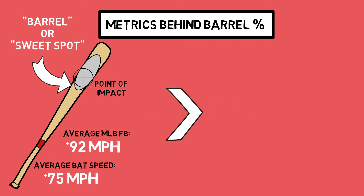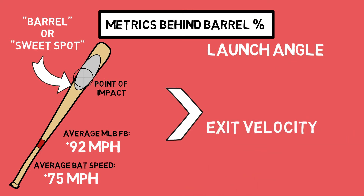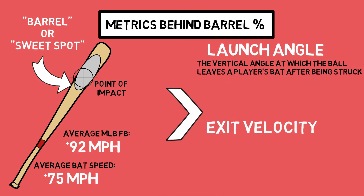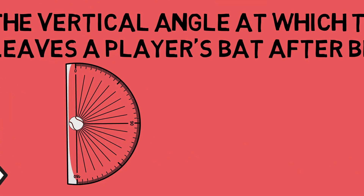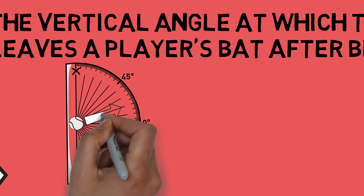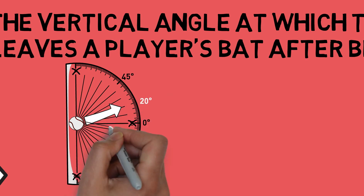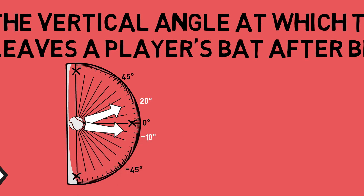What we have to do is calculate that point at which quality contact occurs with the information that we do have. We do this through two other popular variables: launch angle and exit velocity. Launch angle is the vertical angle at which the ball leaves a player's bat after being struck. Using a protractor as an example, if the ball represents our point of contact, a line parallel to the ground is zero degrees — anything above is a positive number and below is negative. So a ball hit at 20 degrees would be a line drive, and one at negative 10 degrees would be a ground ball.